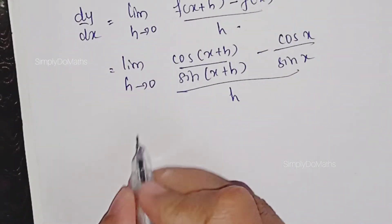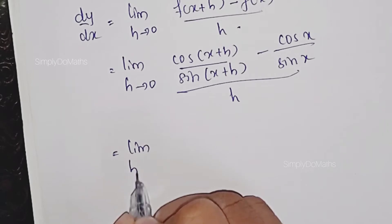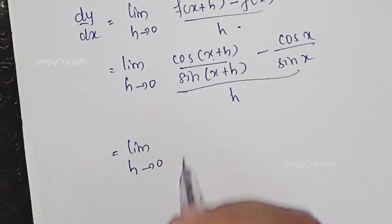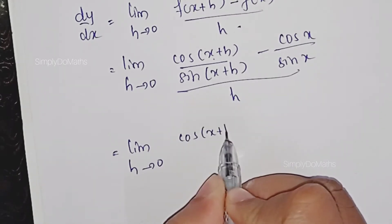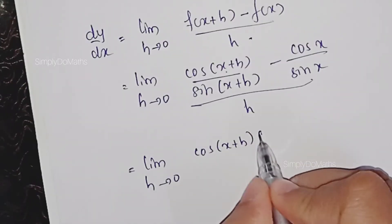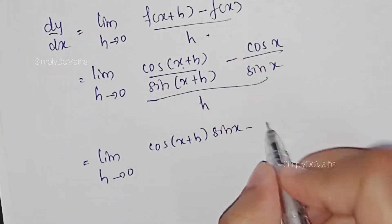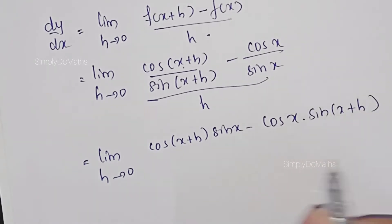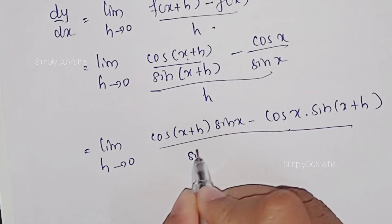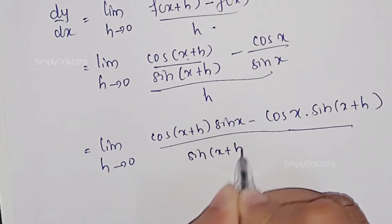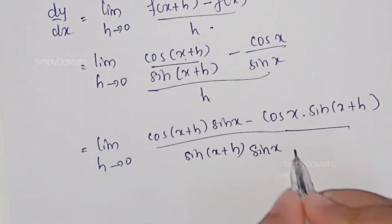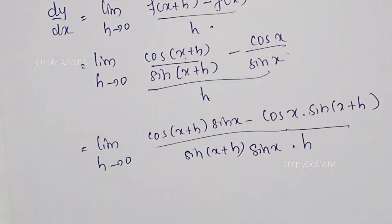This will be equal to the limit as h tending to 0, taking the LCM of the terms, we get cos(x+h)·sin(x) minus cos(x)·sin(x+h), whole divided by sin(x+h)·sin(x)·h.